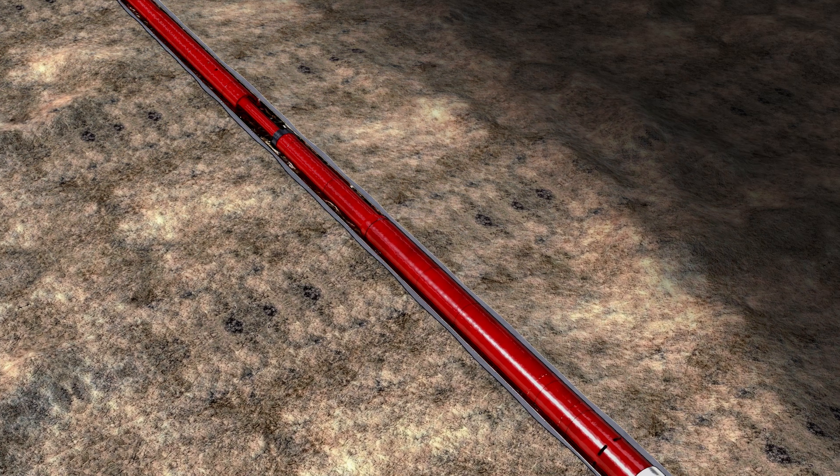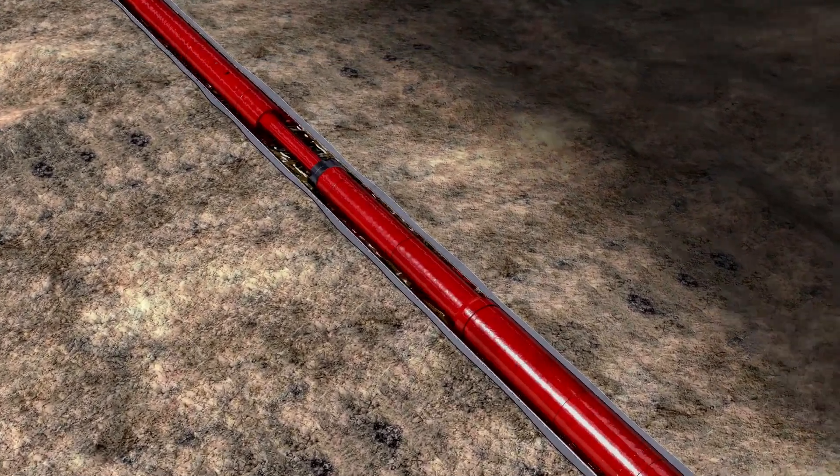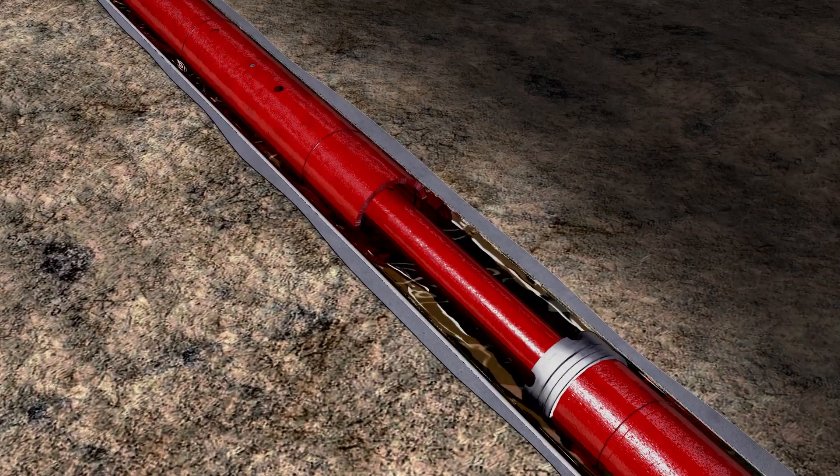The SRCTRL is opened by slacking off weight against the liner top, overcoming the collet and primary shear ring.